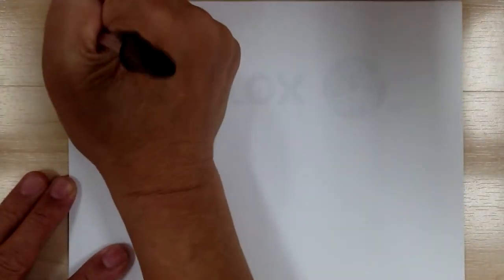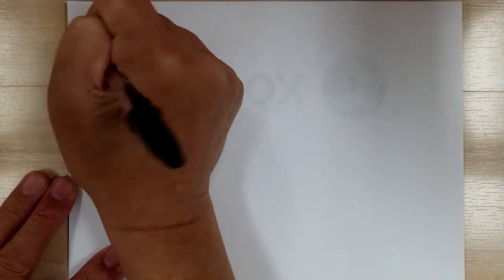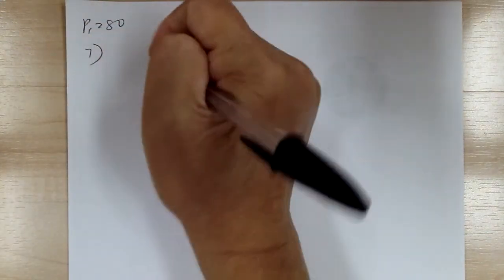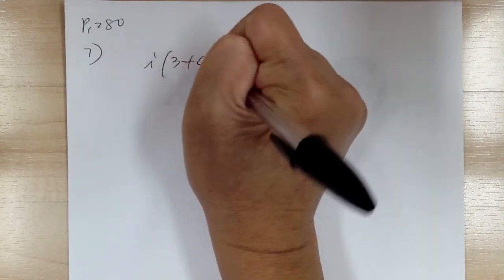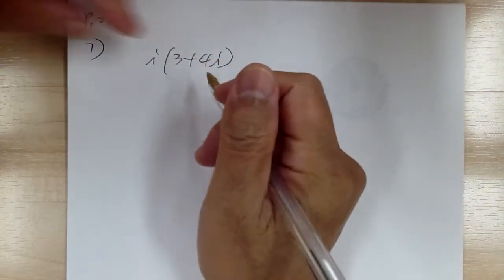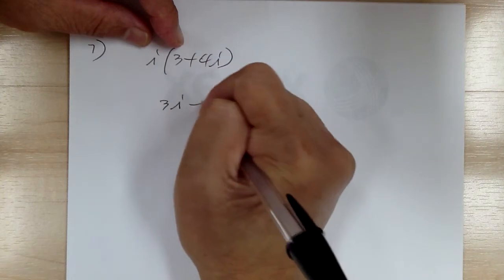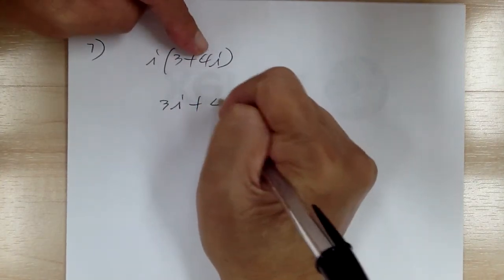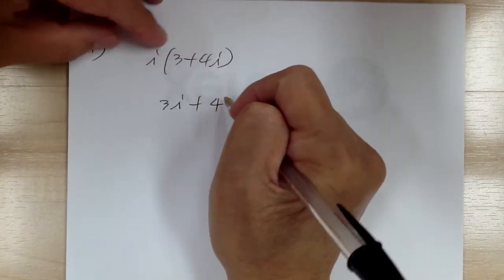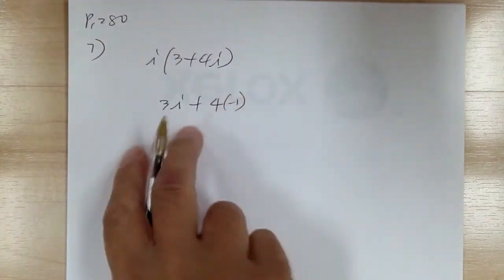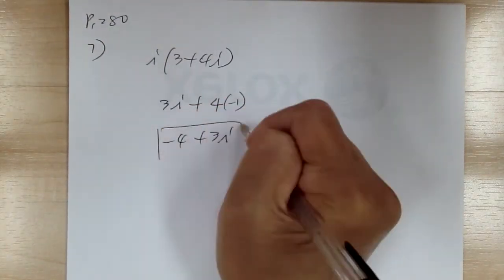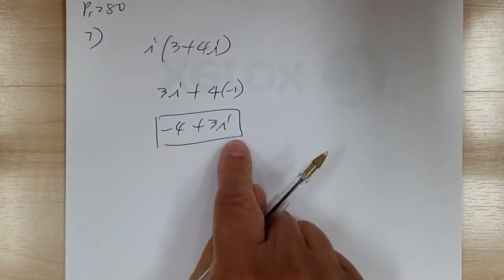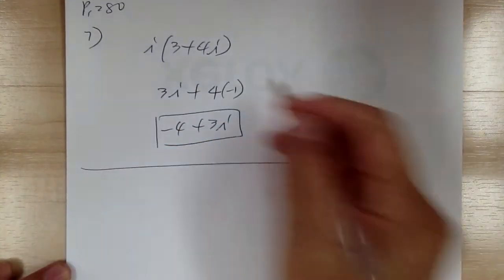Number 7: you have i times (3 plus 4i). Distribute: 3i. For the second term, 4i times i gives negative 1, so it becomes negative 4. Rearrange to get negative 4 plus 3i. Always put your answer in the a plus bi form.